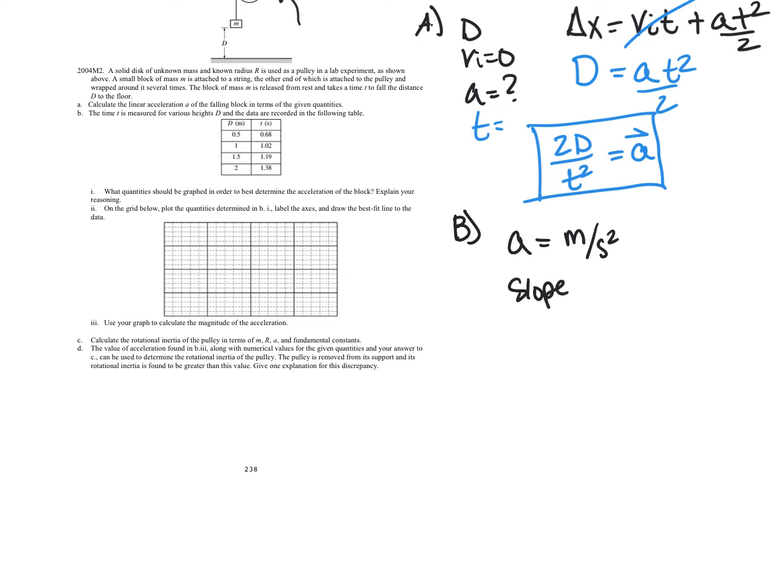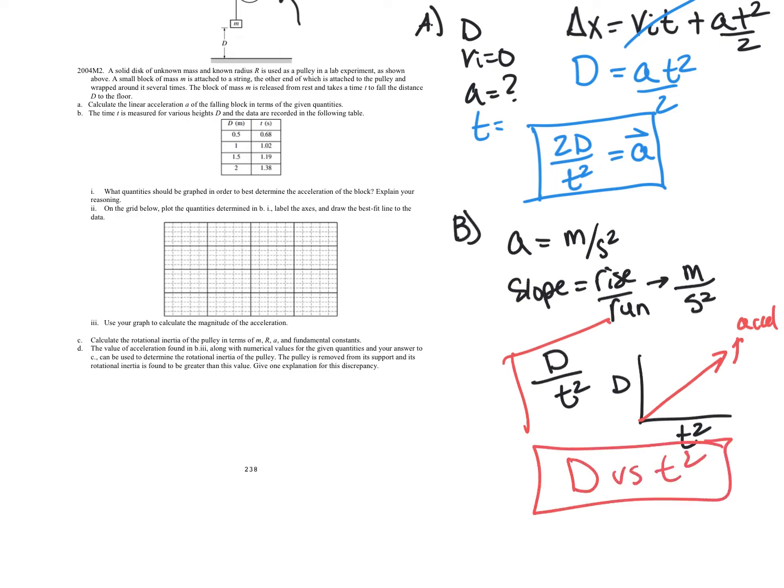So slope is rise over run. So we want our slope, again very key word here is linear or graphed. I guess they want a linear graph. So that's going to be meters, and our run is going to be second squared. So in this case, meters is measured in distance, and time is measured in seconds, so that's T squared. So B would be if we graph distance versus T squared. That slope would give us a unit of acceleration. So I would say D versus T squared is an acceptable answer for part B.